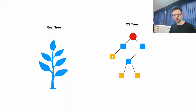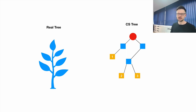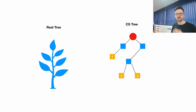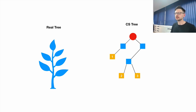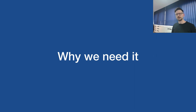Another important point I'd like to focus on is the concept of a tree. We have two kinds of trees: real trees and computer science trees. Real trees grow from the bottom to the top — the root is at the bottom and the leaves grow up. In computer science it's different: the root is at the top and it grows down, and the leaves are at the bottom.